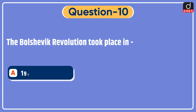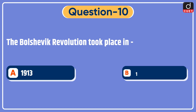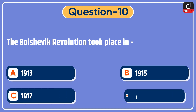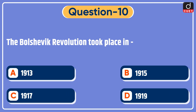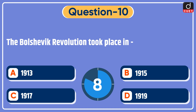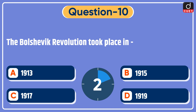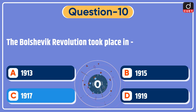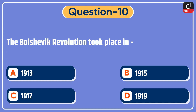Next question: the Bolshevik revolution took place in — 1913, 1915, 1917, or 1919? The correct answer is option C, 1917.